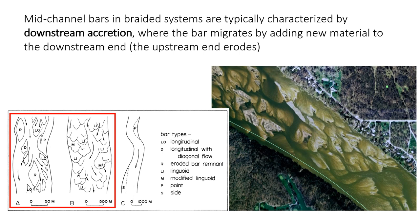In braided rivers, bars typically move in a process called downstream accretion: the upstream end of the bar gets eroded, the sediment moves along, and then gets deposited on the downstream side, gradually moving the whole bar down the channel. These erosion, transport, and deposition processes only occur when the bar is submerged under flowing water. Bars can also grow laterally or upstream, but these tend to be less common in braided rivers. The many different bar names used in modern rivers — like longitudinal bars or lingoid bars — are often challenging to identify in the sedimentary rock record, so we won't focus on the different bar types in this class.